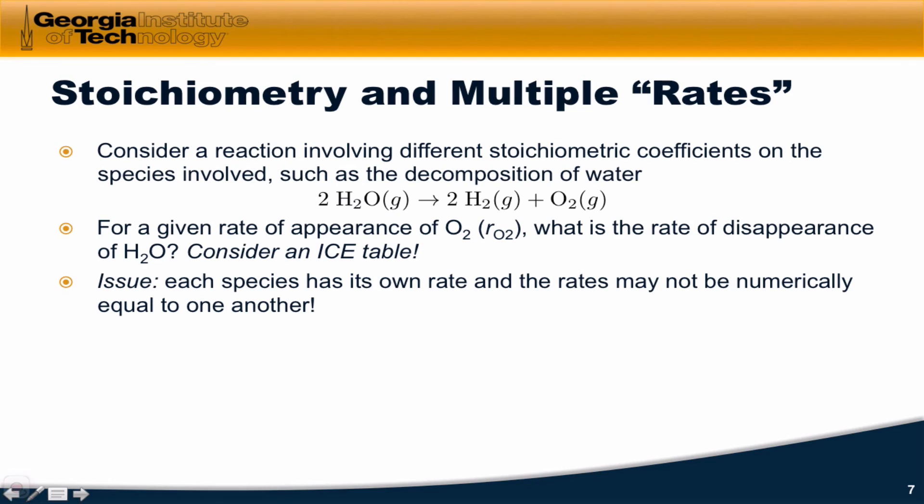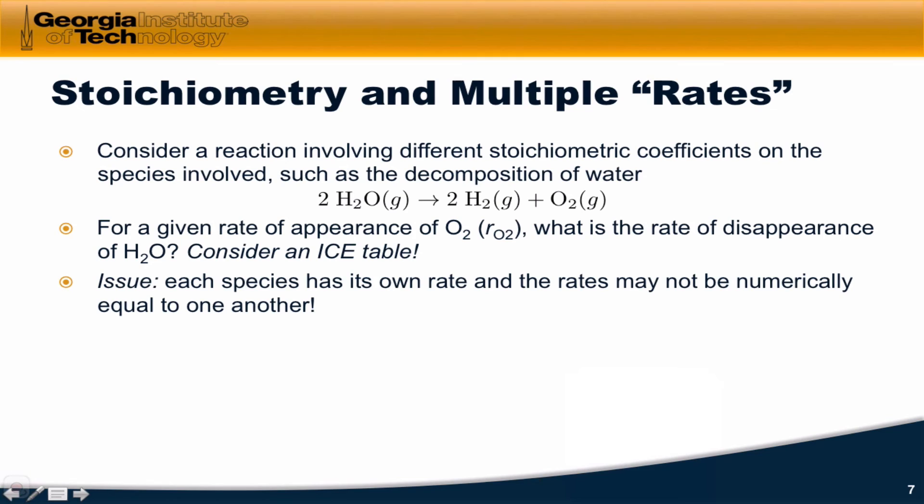In general, each species with a unique stoichiometric coefficient has its own rate, and when those coefficients are not equal, the rates may not be numerically equal to one another. So this raises the question, how do we define the reaction rate? We've got to agree on a standard convention for the reaction rate.